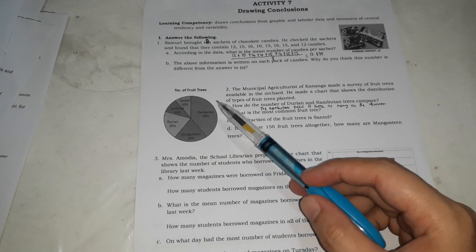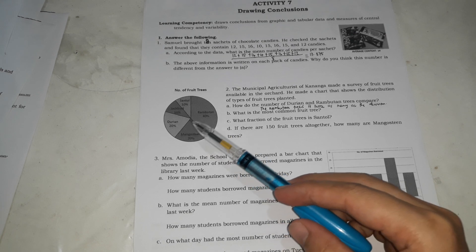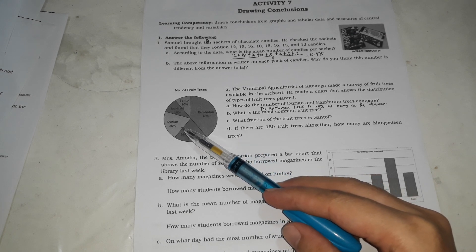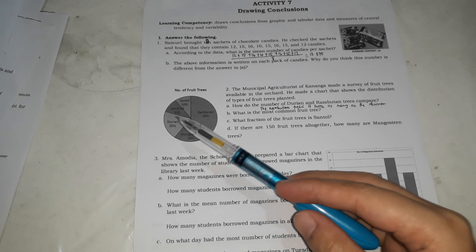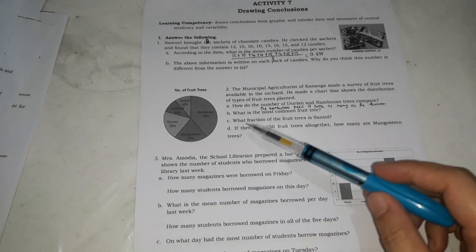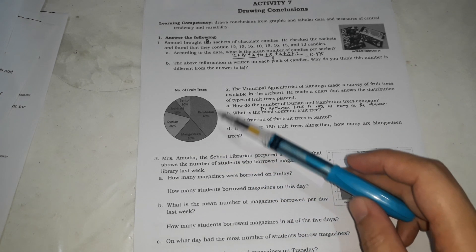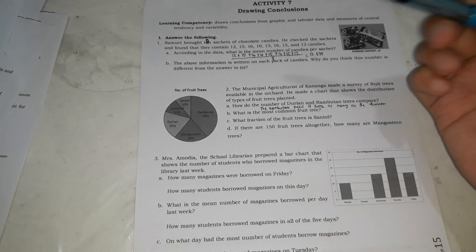the number of rambutan trees is twice as many as the durian. Kasi, di ba, 20% tapos 40%. Twice as many siya, 20 at saka 40. You could also have the rambutan is more than durian, more than twice the durian. Or, it's the rambutan that is more than durian. What is the most common fruit trees? Yung pinakamalaki, yun siya ang common. It's rambutan.